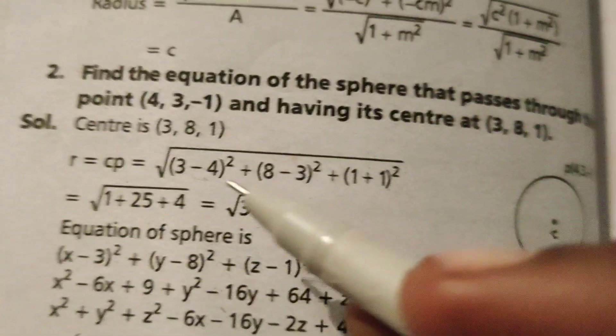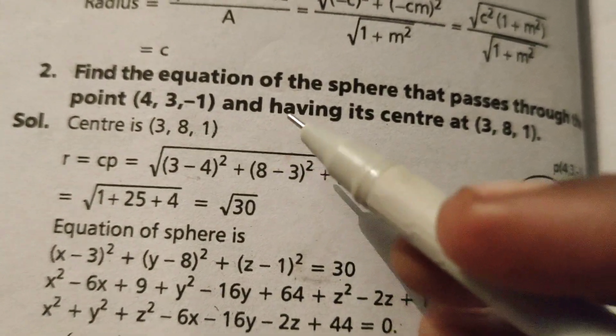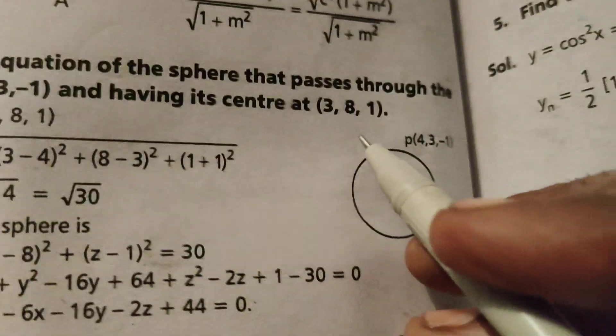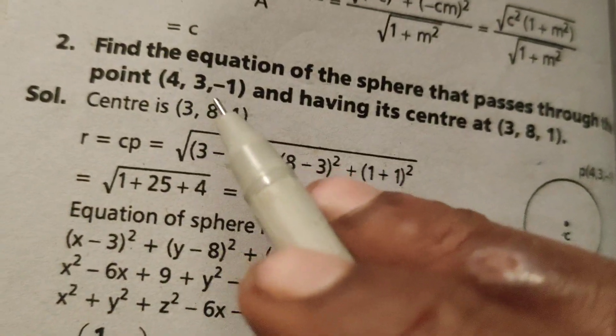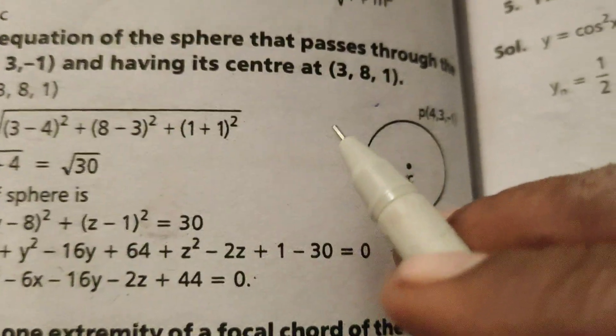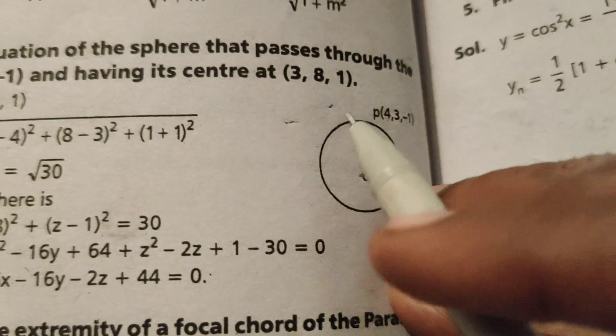This is Dr. Aethi. Today we are going to explain this problem. Find the equation of the sphere that passes through the point (4, 3, -1) and having its center at (3, 8, 1).